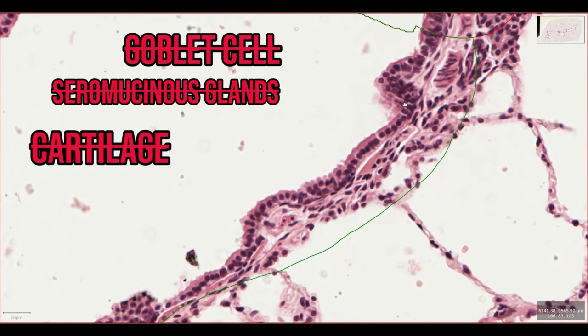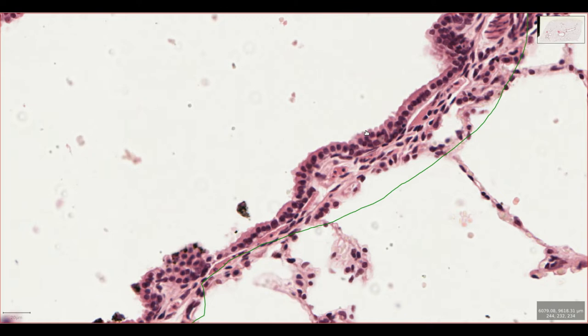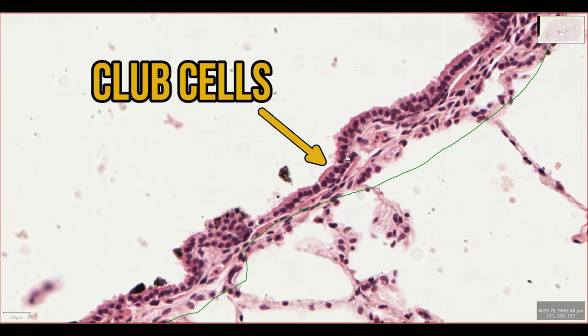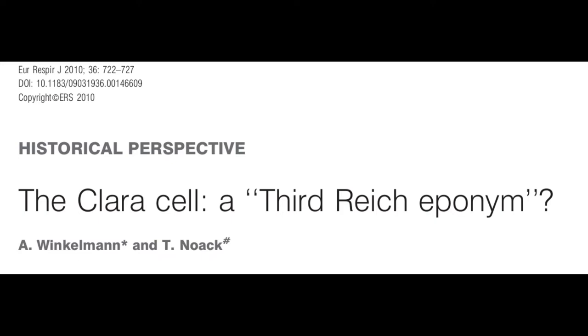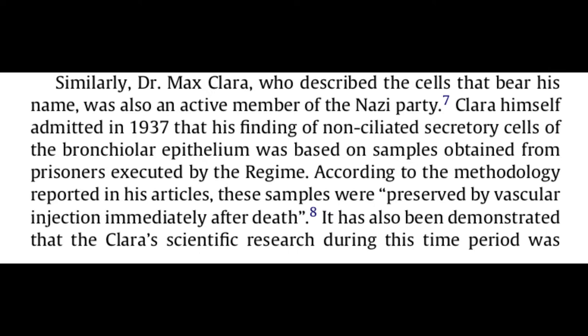There are still secretory cells here, but these are called club cells. These cells have apical secretory granules rather than a large vat of mucus, so they're not easily seen on routine stains. They used to be called Clara cells, but it turns out that Max Clara was an enthusiastic Nazi who used tissue from executed prisoners in his work, so everyone decided to ditch his name from the literature in 2012.